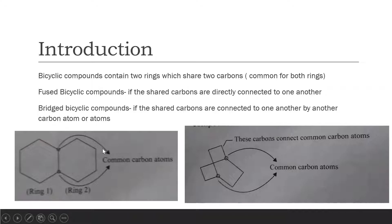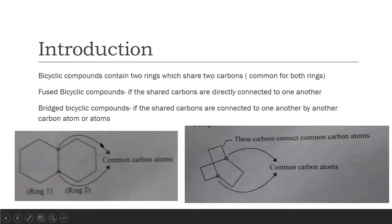The first example represents a fused bicyclic compound. In the second one, the two common highlighted carbon atoms are connected by two sets of bridges — in the first bridge there are two carbon atoms connecting the common carbons, and in the second bridge there are also two carbon atoms. These common carbon atoms are also known as bridgehead carbon atoms, and the bond formed between them is known as a bridge.